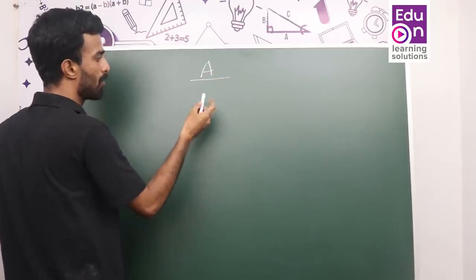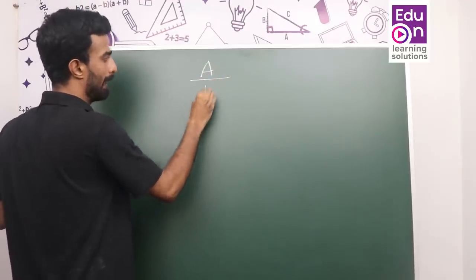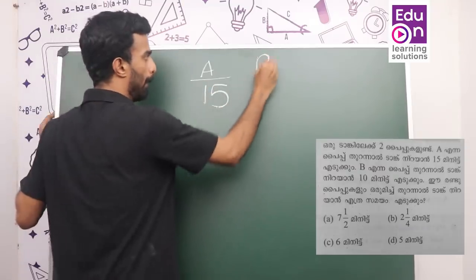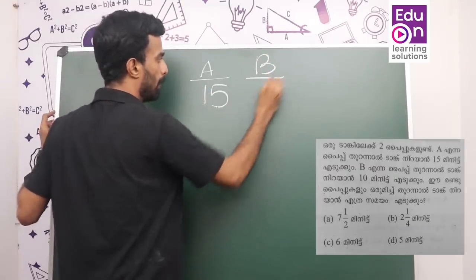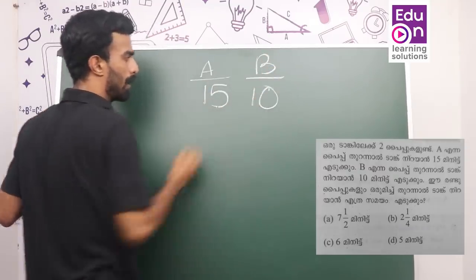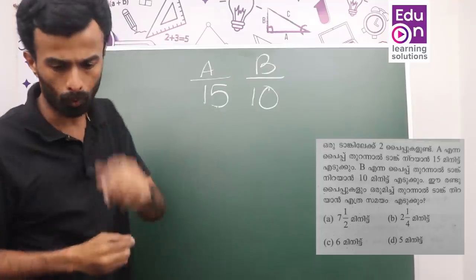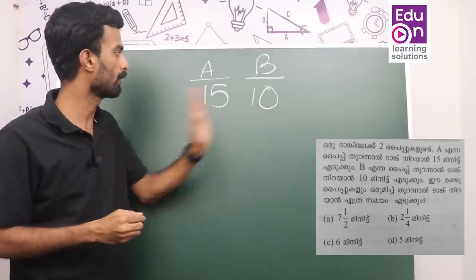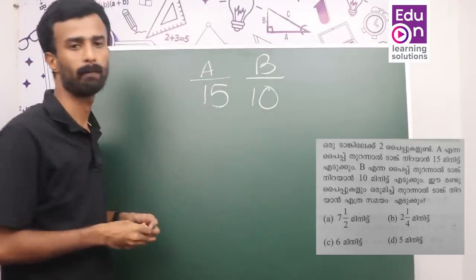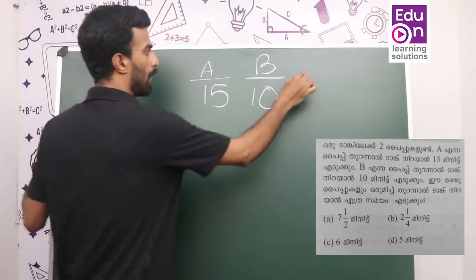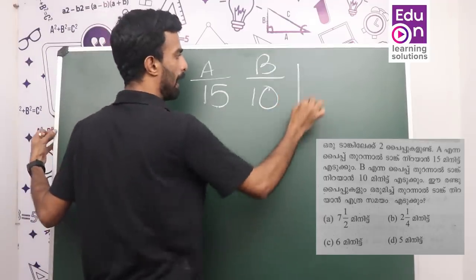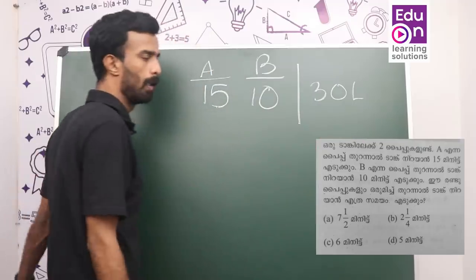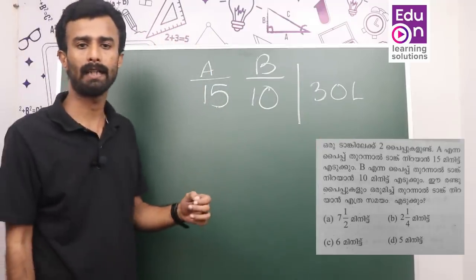A is 15 minutes. We also have pipe A. Pipe A is 15 minutes. If B is 10, we ask a question on screen: A and B.